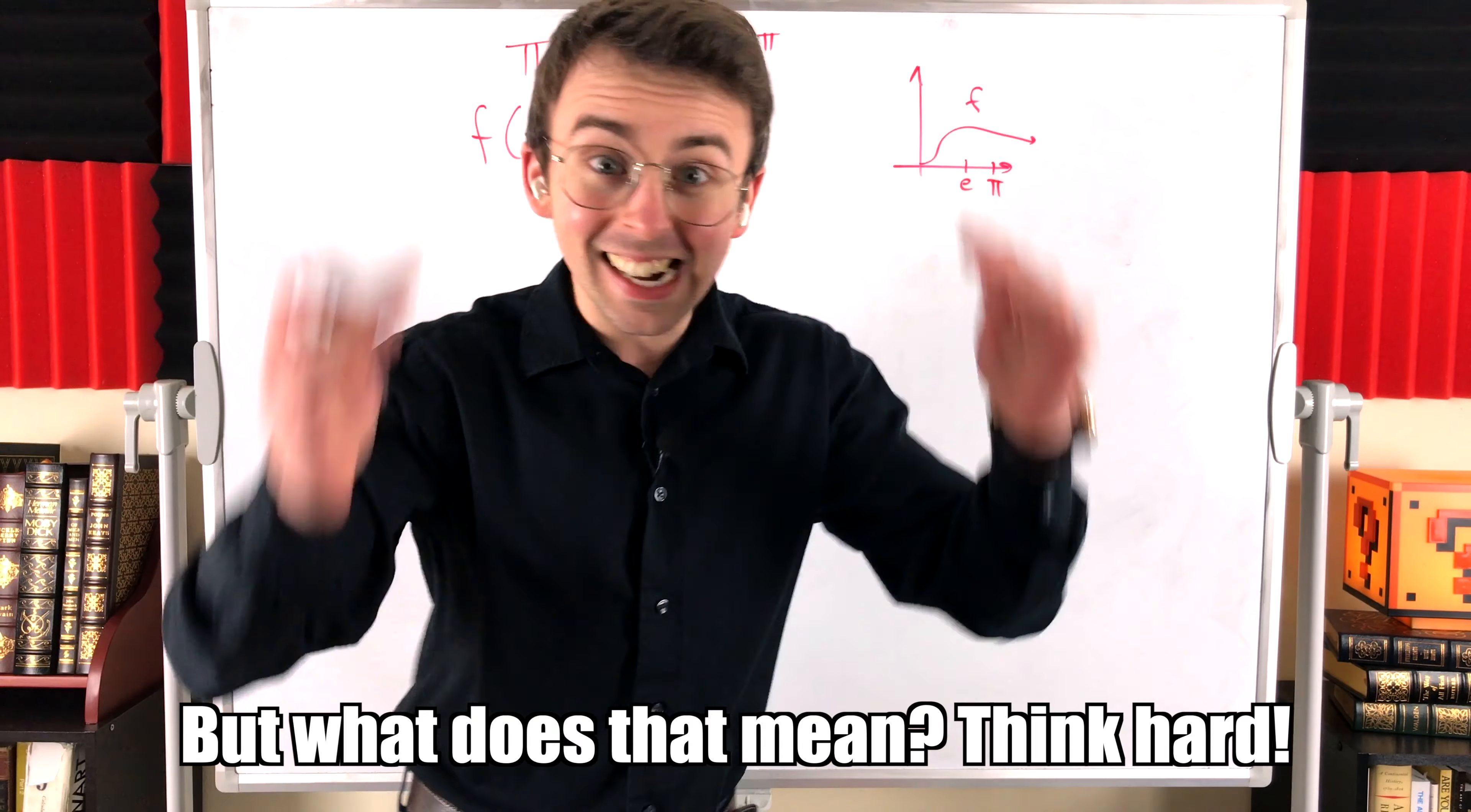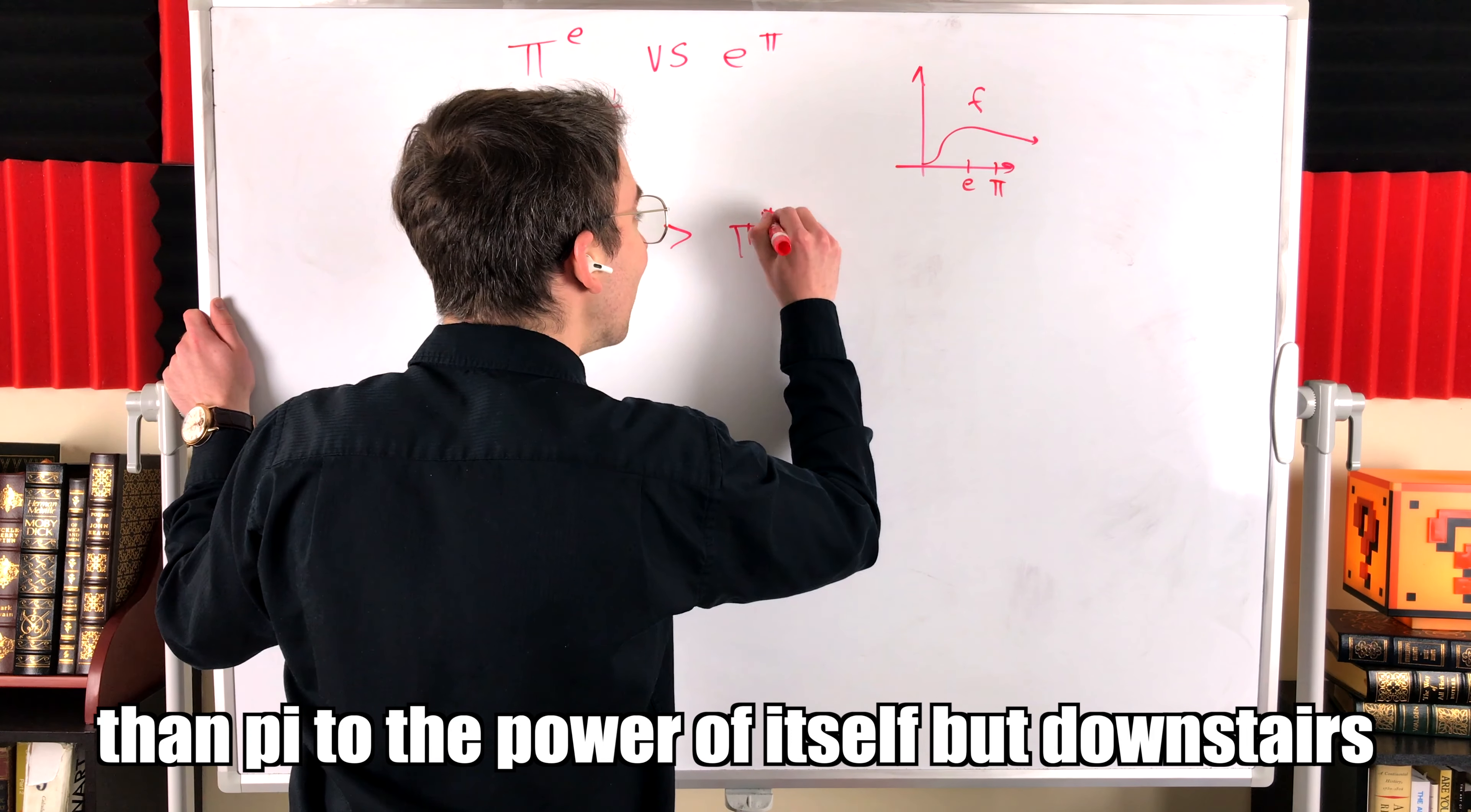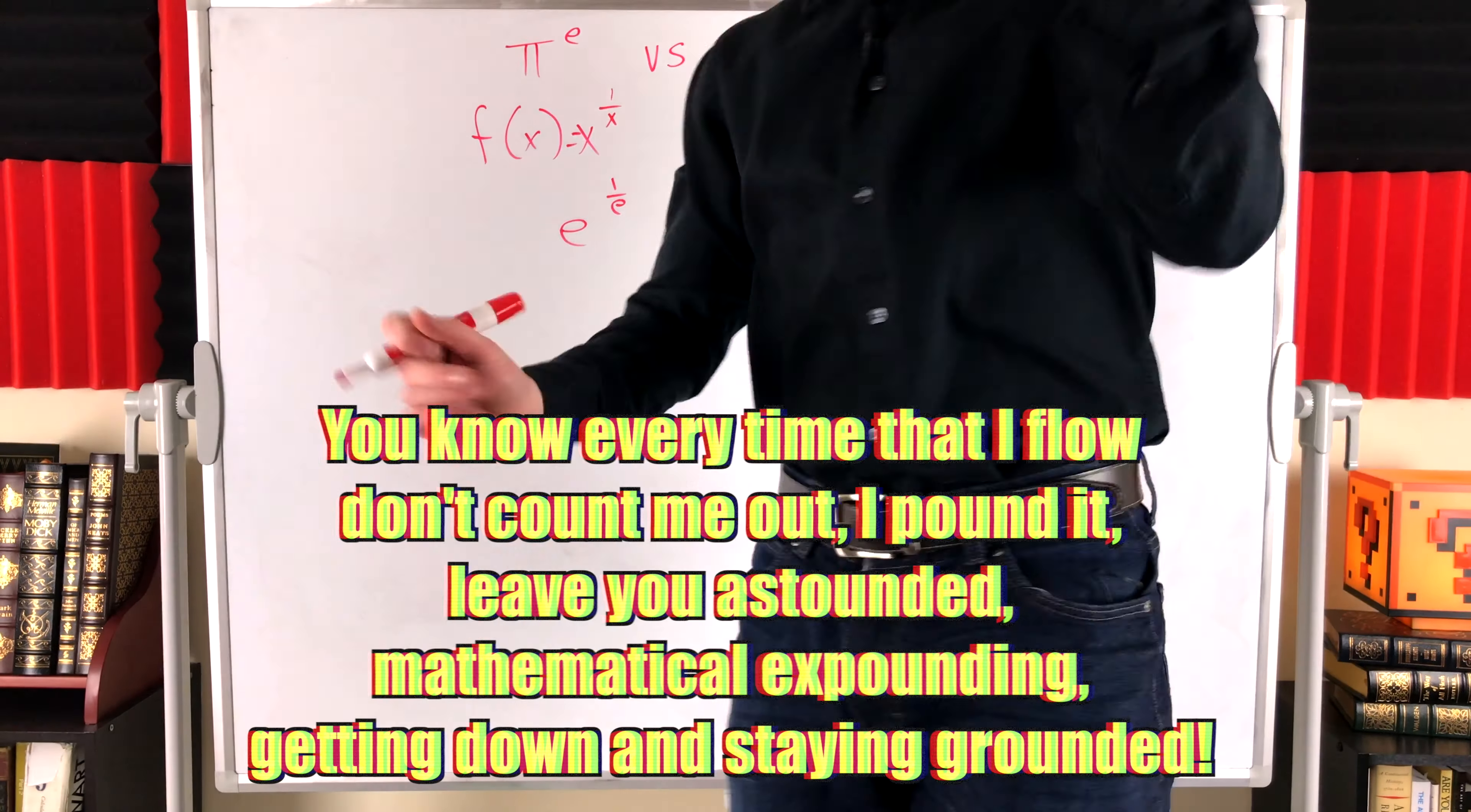But what does that mean? Think hard. When we're making these steps, we've got to step back to reflect on the effects. This means e to one over itself is greater than pi to the power of itself but downstairs. You know, every time that I flow don't count me out, I pound it. Leave you astounded. Mathematical expounding. Getting down and staying grounded.